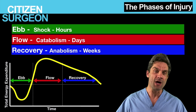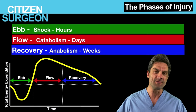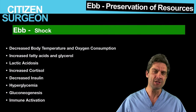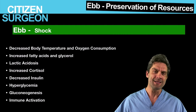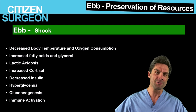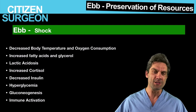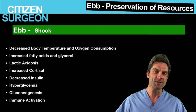The ebb phase or shock occurs in the first hours and minutes following an injury and severe trauma. As you can see, there are a number of changes. Activation of the sympathetic system, the catecholamines, and release of cortisol leads to glycogenolysis and an increase in your glucose levels. This also leads to decreased insulin secretion, insulin resistance, and increased free fatty acids by lipolysis — all to create more energy for the flow phase which is about to come.